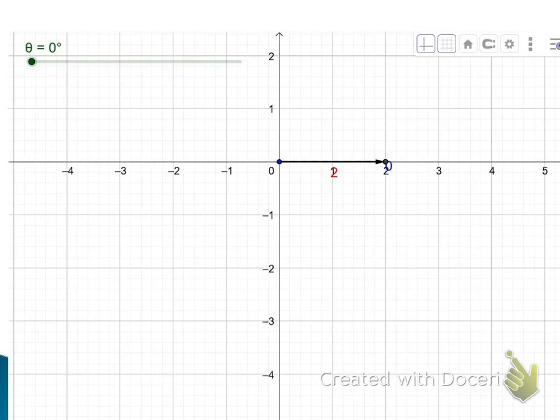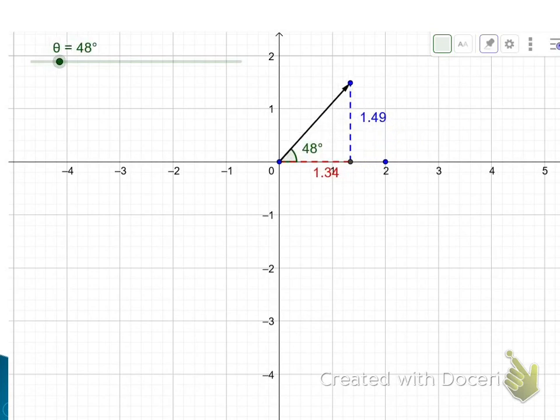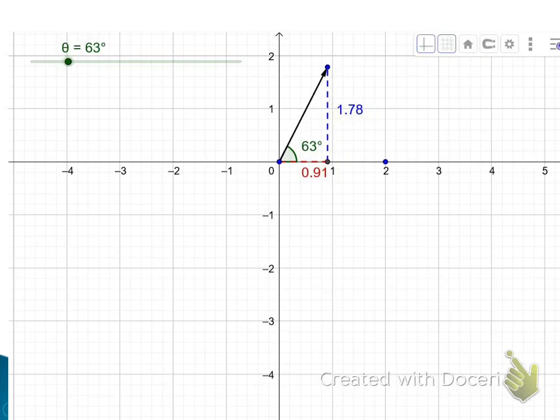As I start changing theta, you can see the y component increase and the x component decrease. But the original vector itself, which is now the hypotenuse, still has a length of 2, just like it did when it was traveling around the circle.